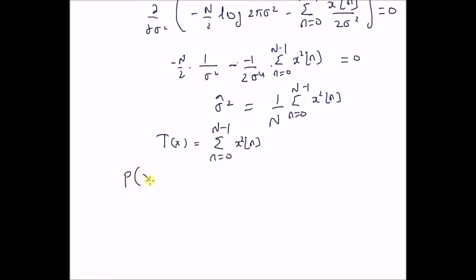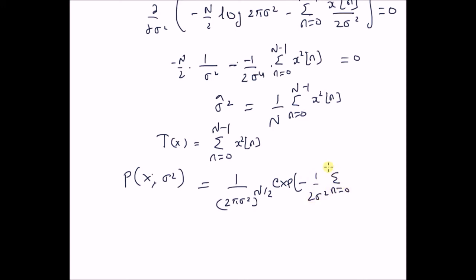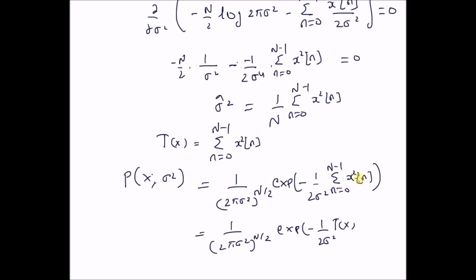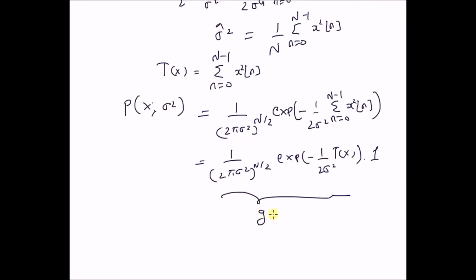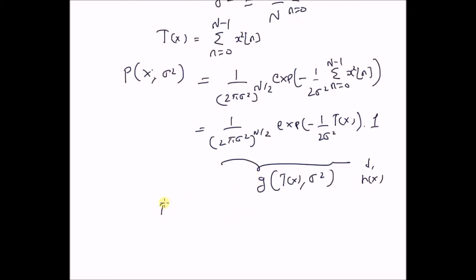Now, let us look at the probability distribution of the observations given σ², which equals (2πσ²)^(−N/2) exp(−1/(2σ²) · Σ(n=0 to N−1) x²(n)). Clearly, this can be written as (2πσ²)^(−N/2) exp(−1/(2σ²) · T(x)) times 1. This sum is basically the statistic T(x), and the remaining value is 1. So this function is g(T(x), σ²) and h(x) = 1, a constant function. Therefore, the Neyman-Fisher factorization is satisfied and T(x) is a sufficient statistic for estimation of the unknown parameter σ².